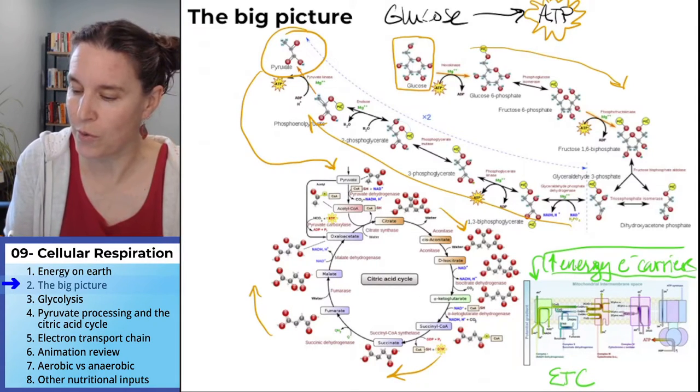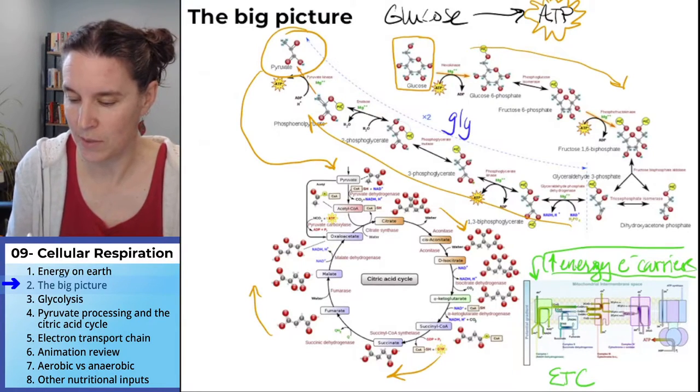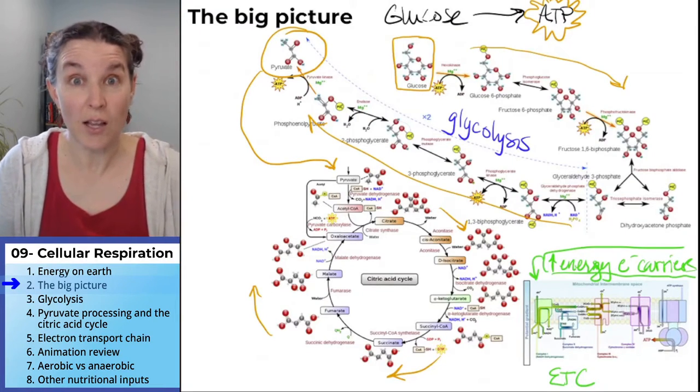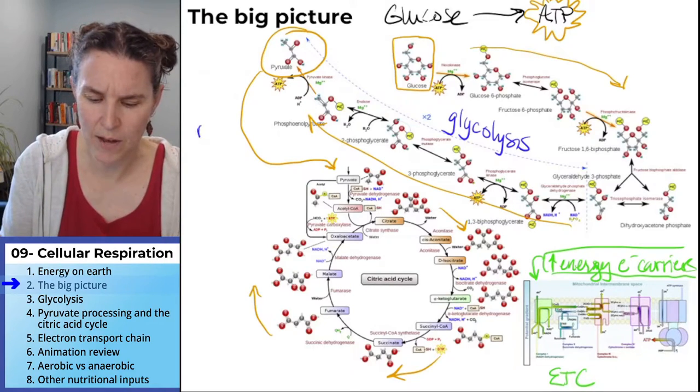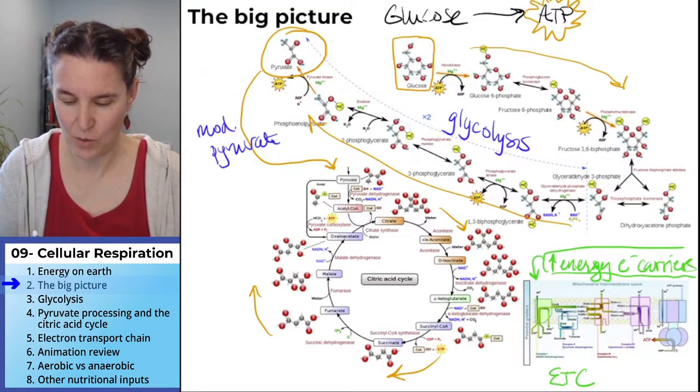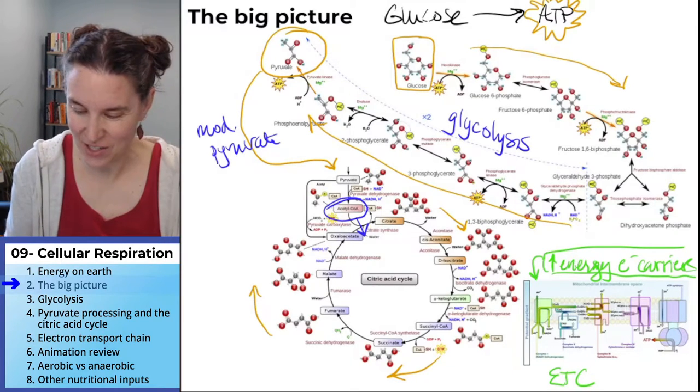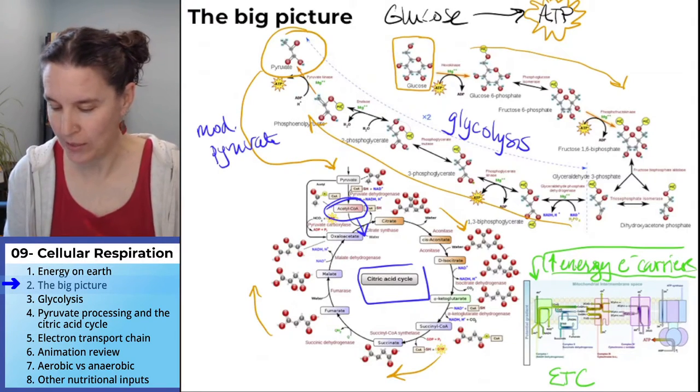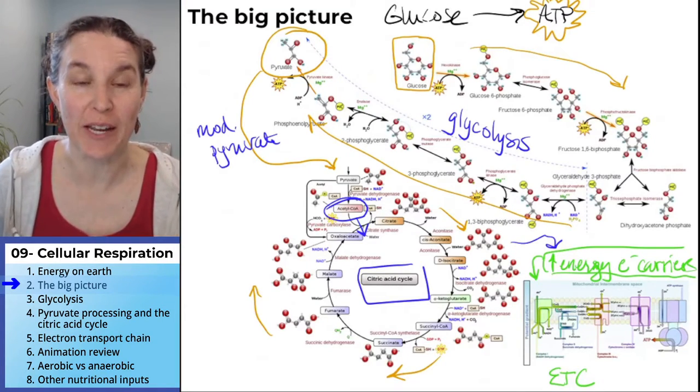We start with glucose, we go through a process called glycolysis, that's this part up here, taking glucose and turning it into pyruvate. We then modify pyruvate, turn pyruvate into acetyl-CoA. Acetyl-CoA enters the citric acid cycle, and that whole thing produces high-energy electron carriers that go to the electron transport chain. That's it.